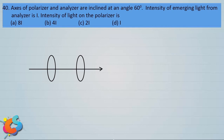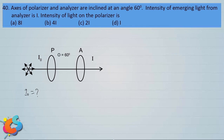We have a system of two polaroids: a polarizer and an analyzer. Unpolarized light of initial intensity I-naught is incident on the polarizer. The intensity of emergent light is I and the angle between polarizer and analyzer is 60 degrees. We use Malus's law.